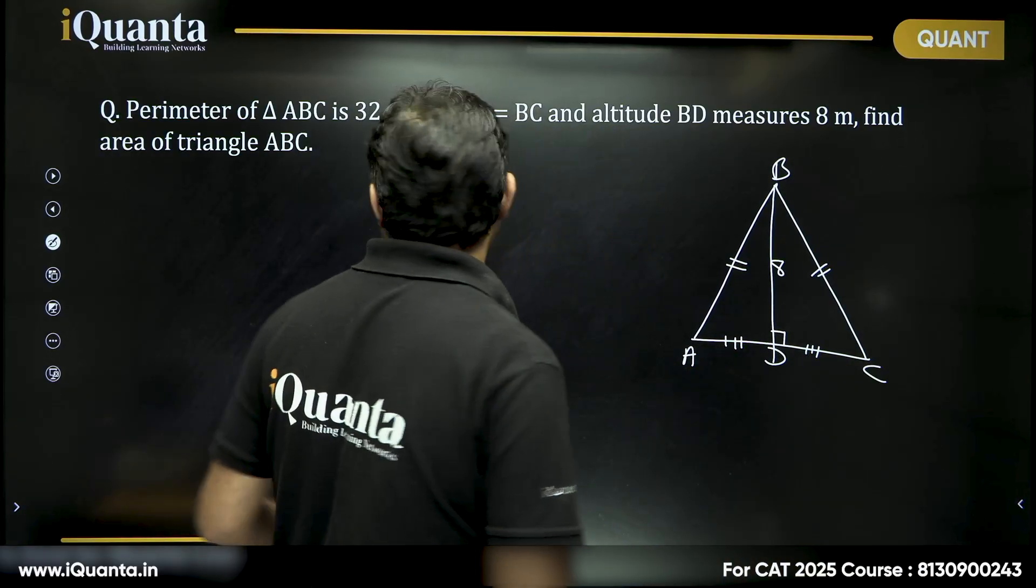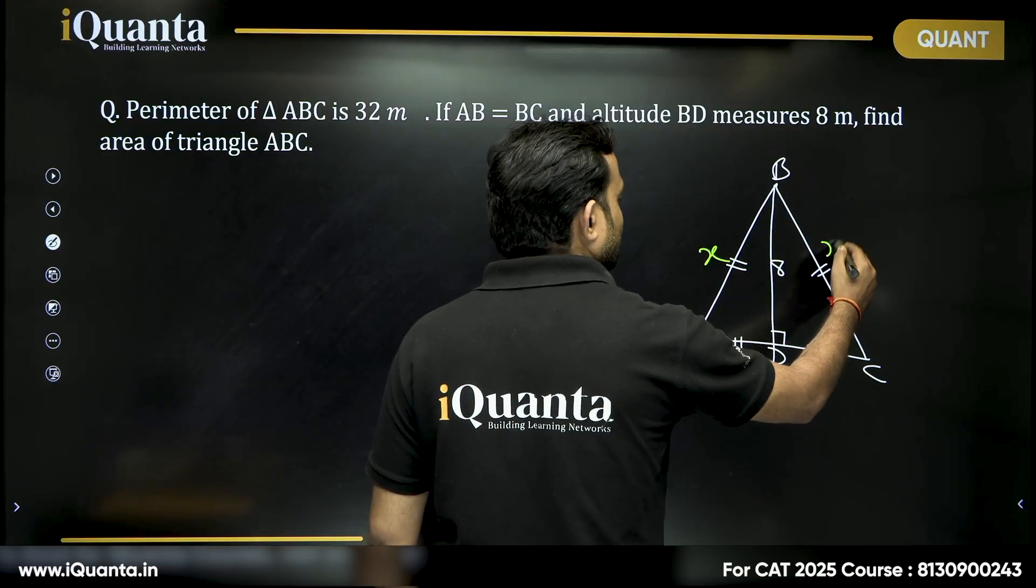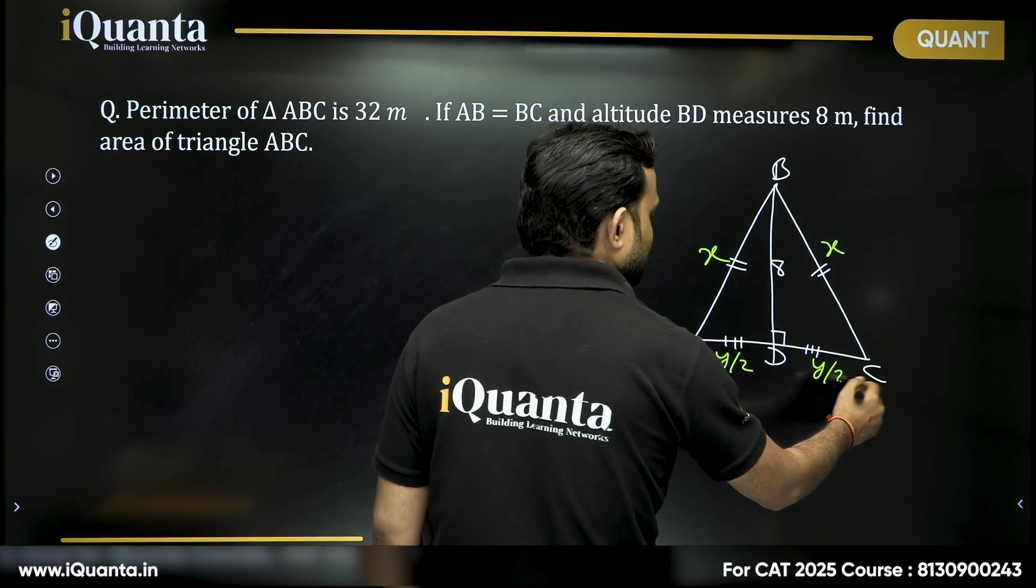Now, can I say if I take the value of AB as X, BC will also be X and if I take AD as Y by 2, DC will also be Y by 2.